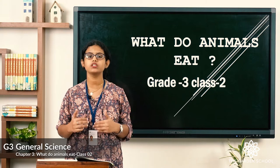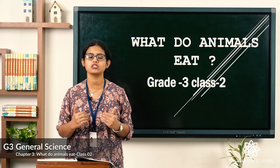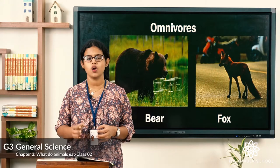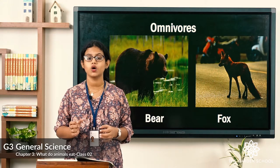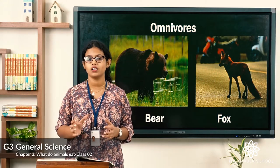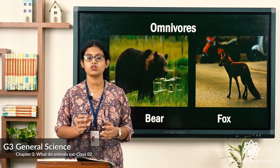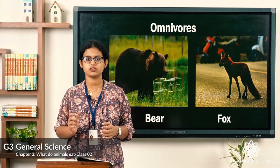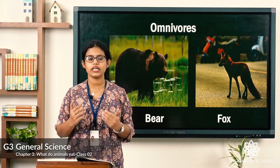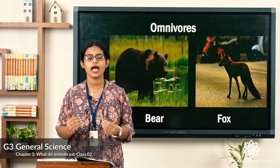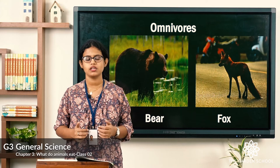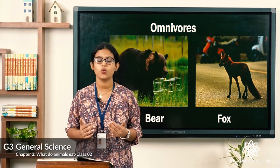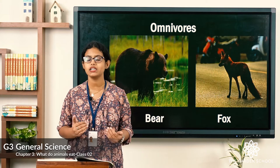Today we are going to see about omnivorous animals. 'Omni' is a Latin word which means 'all,' and 'voris' means 'eaters' — so together, 'all eaters.' It means they eat both plants and animals, and there are many examples of animals which eat both plants and animals.